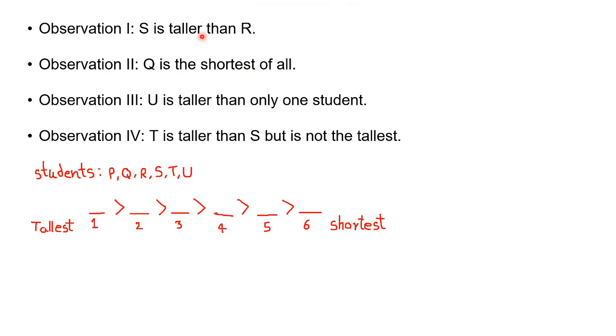So from first observation, S is taller than R. We can write that S is taller than R. In mathematical inequalities, we can write that S is greater than R.